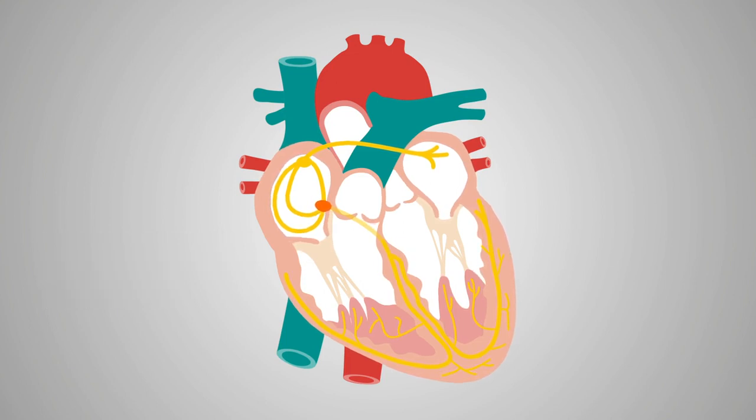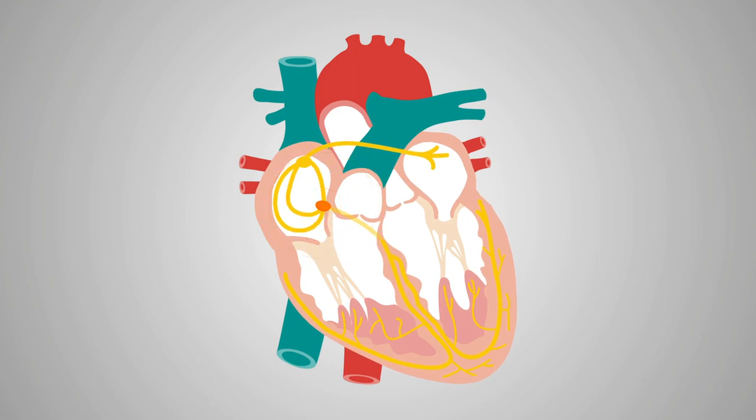Ordinarily, the AV node should allow conduction of the impulse. There is a momentary pause during conduction to allow ventricular filling following atrial contraction.